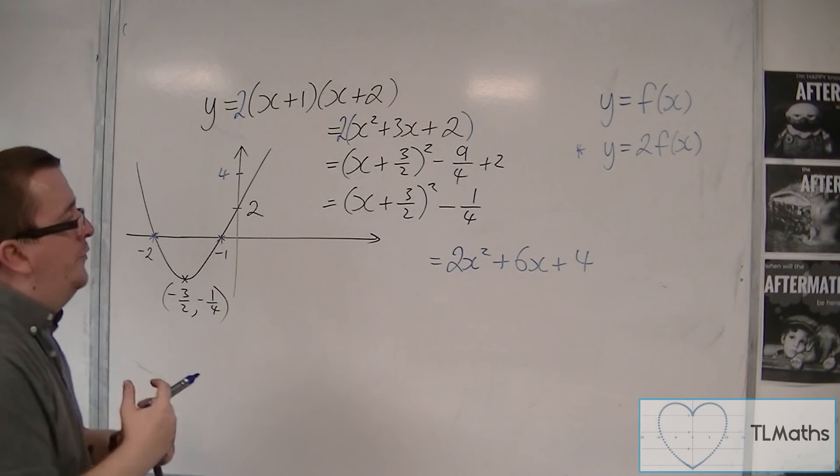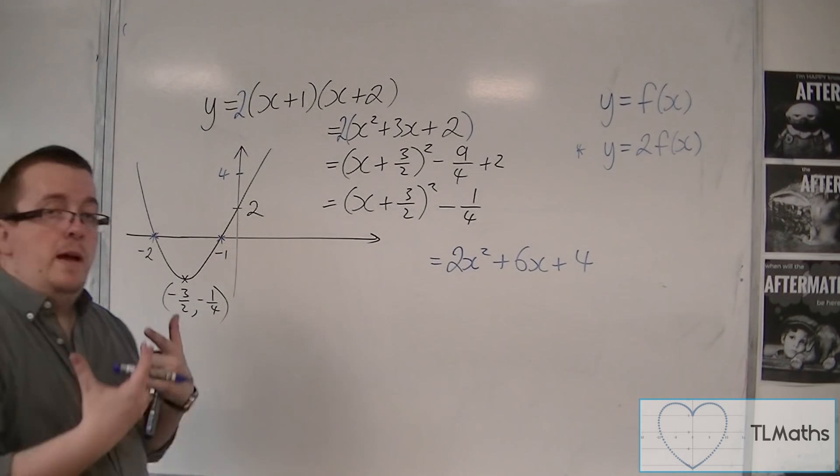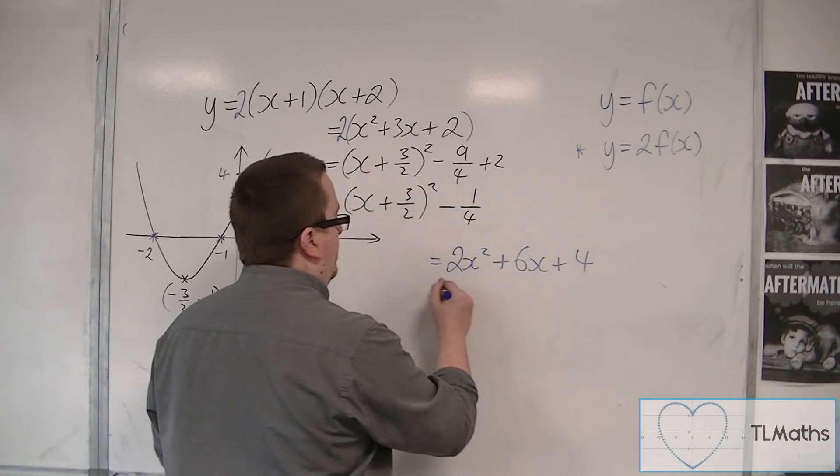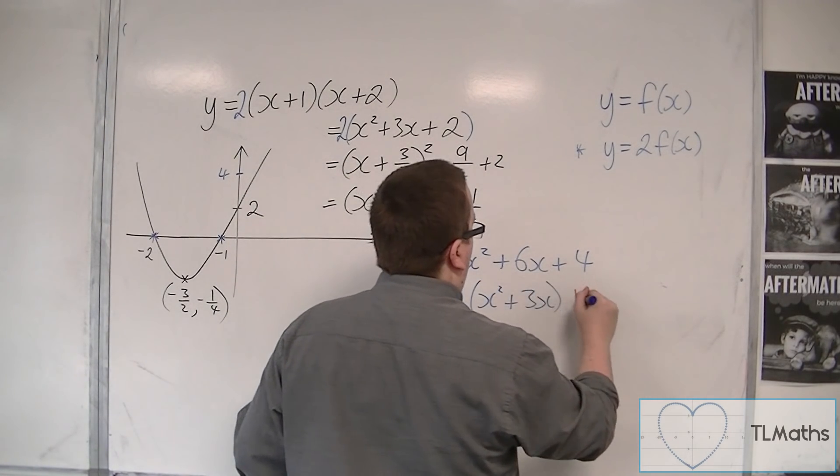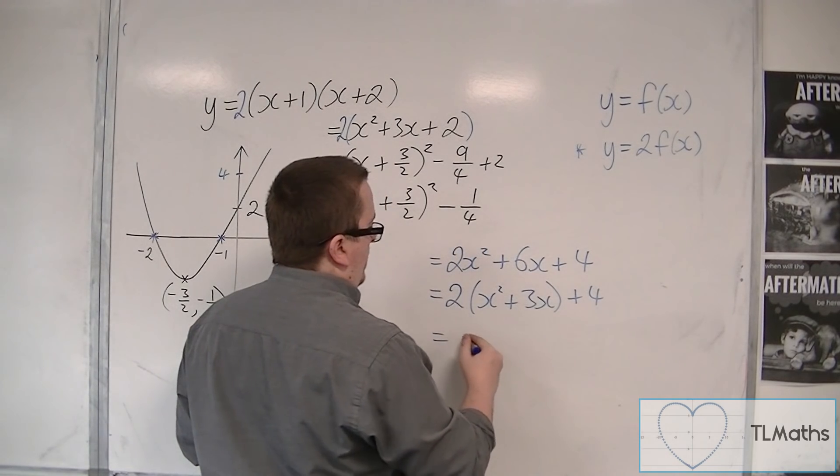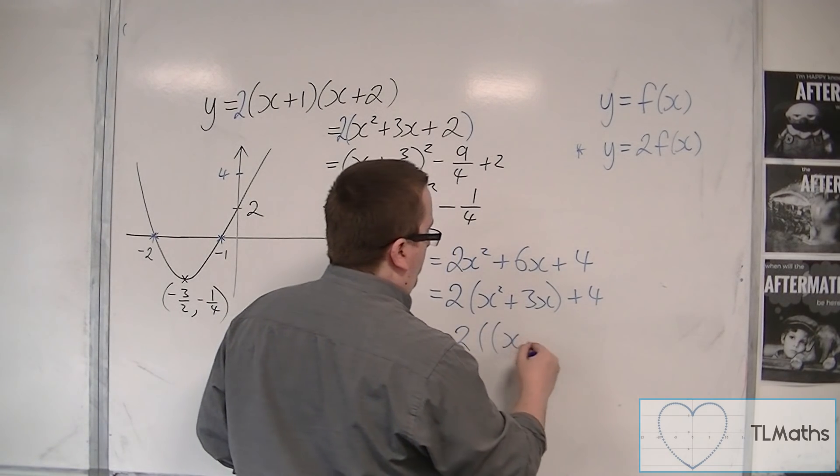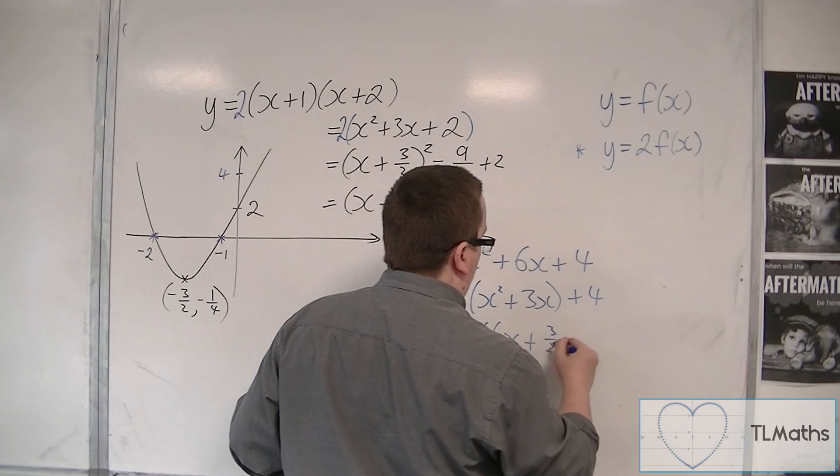And on top of that, I can now complete the square again. So I'm going to have 2 lots of (x squared plus 3x plus 4). So that's 2 lots of (x plus 3 halves) squared, take away 9 quarters plus 4.